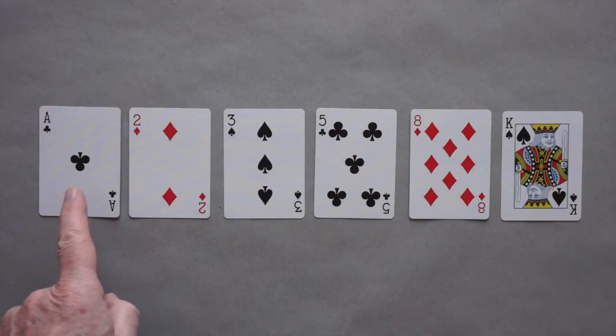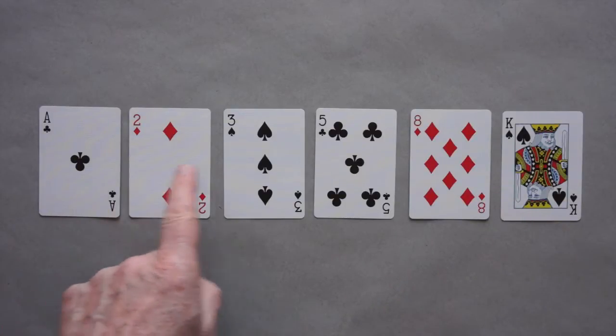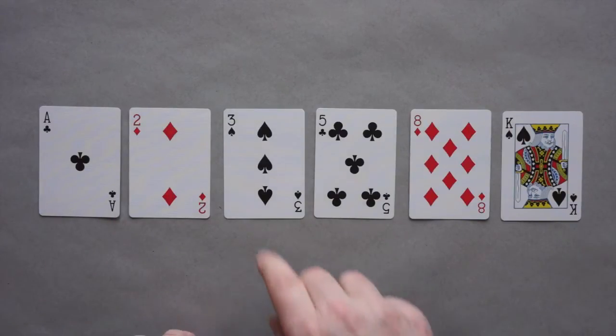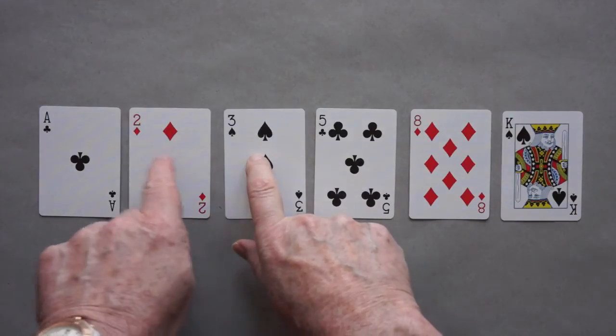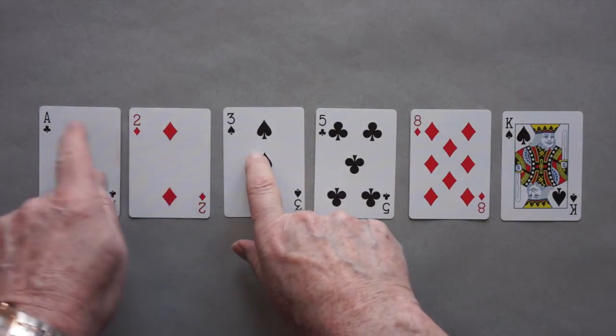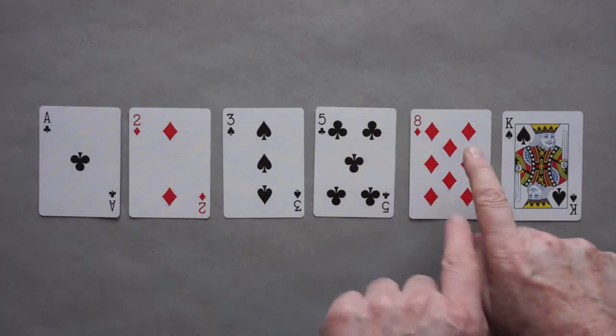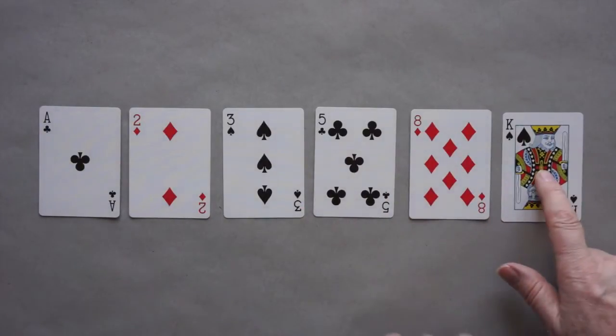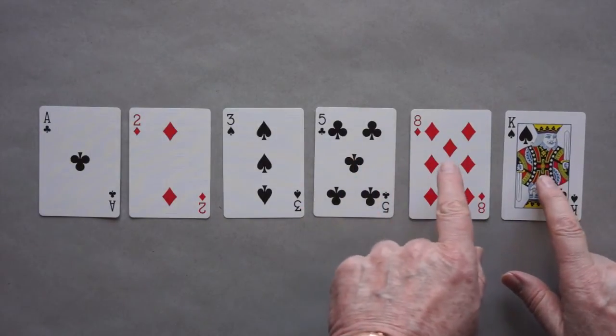Also, the Ace will be 1 for our purposes. So here's the set of six cards that we'll be using for the trick. They do form a Fibonacci series, and each number is the sum of the two before it. So 3 is 1 plus 2, 5 is 2 plus 3, 8 is 3 plus 5, and 13 is 5 plus 8.